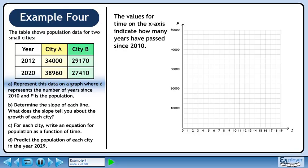The values for time on the x-axis indicate how many years have passed since 2010. So t equals 0 represents 2010 and t equals 19 represents 2029.